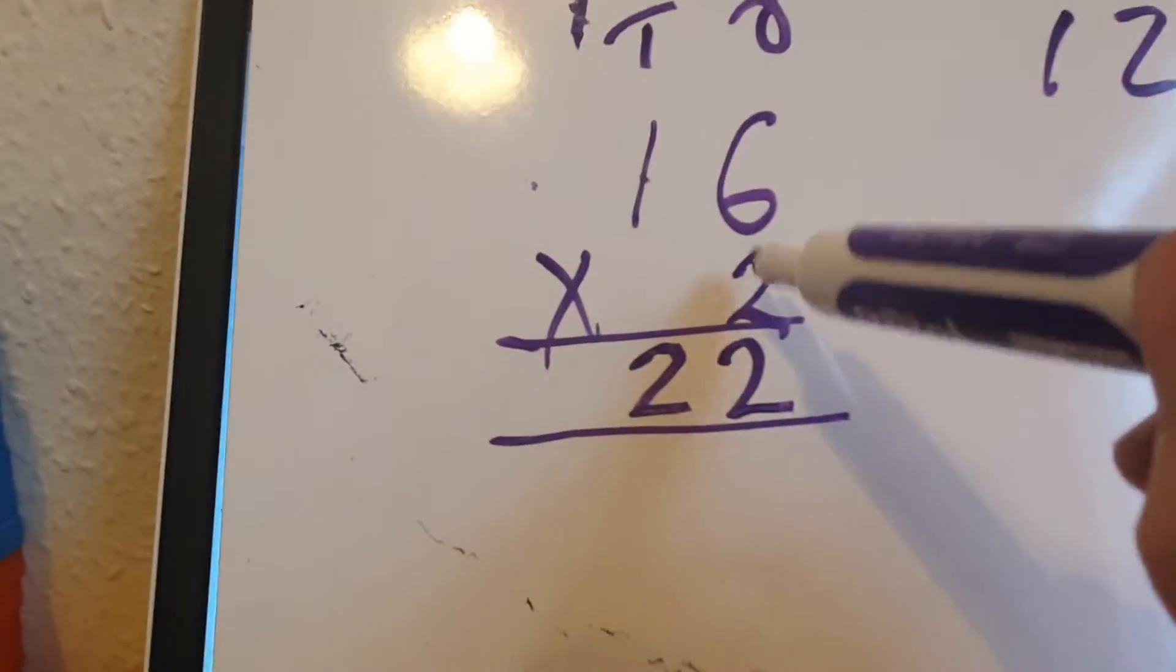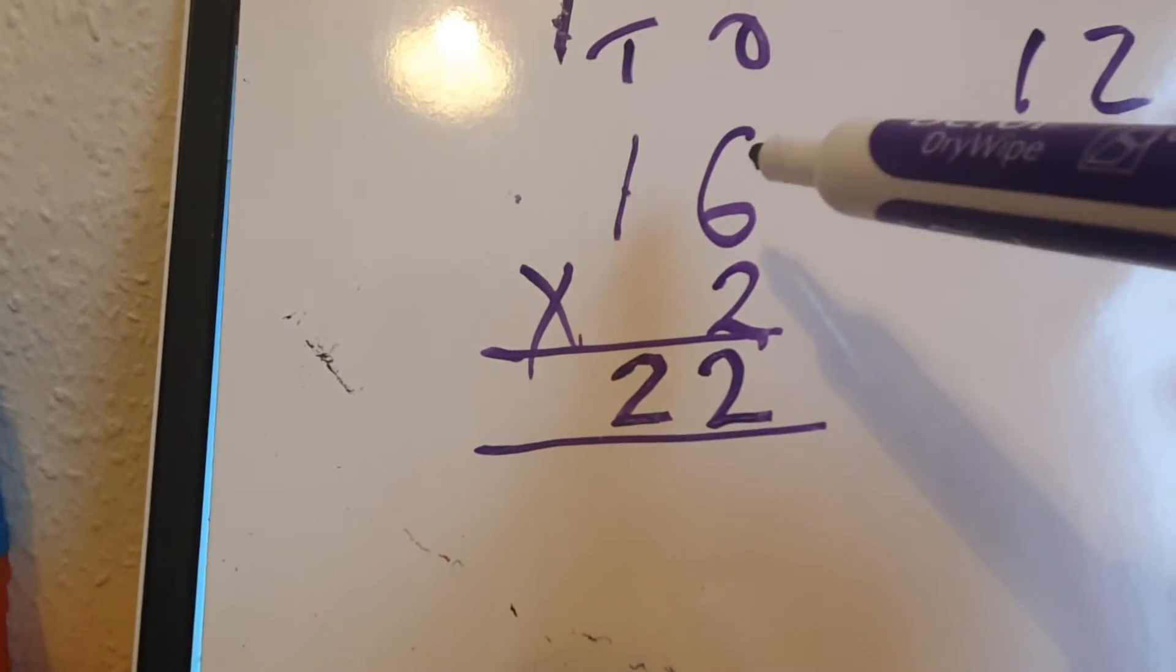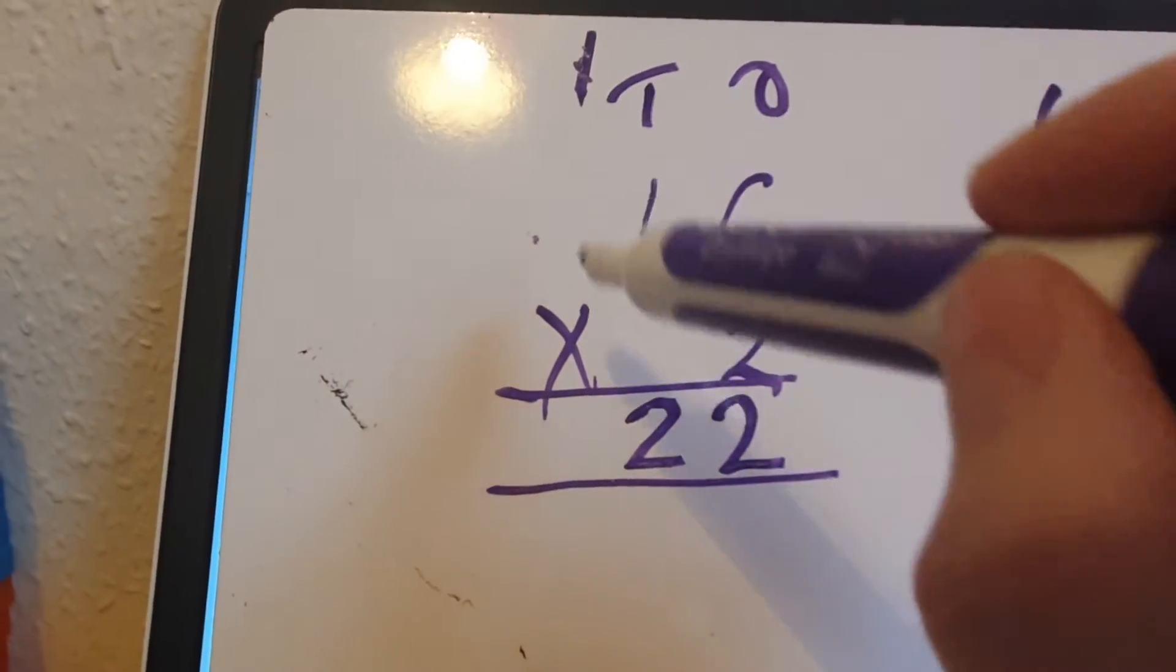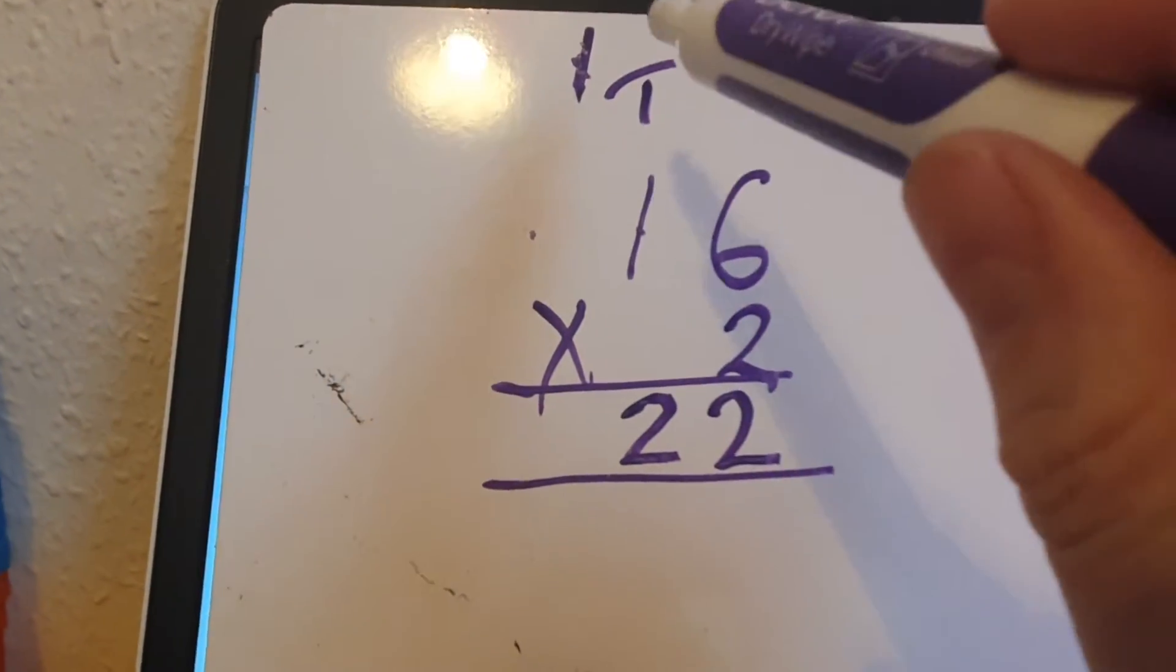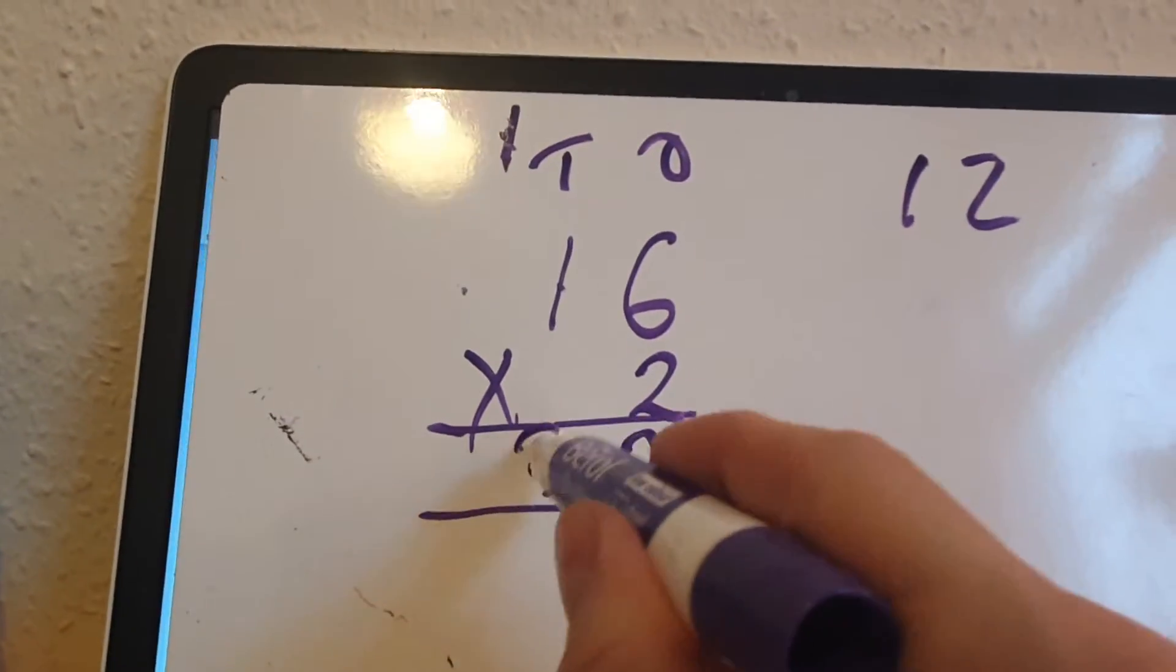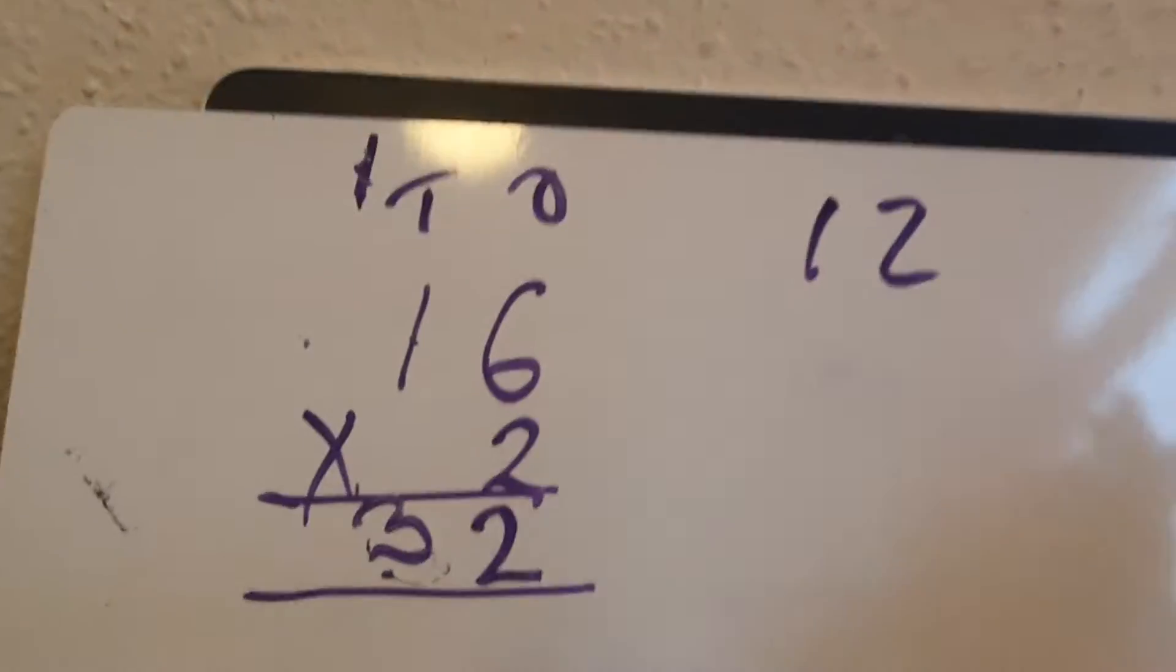But what I needed to do was this calculation. So 2 times 6 is 12, and then 2 times 1 ten is 2. Add that 1 which is 3. Let's see if we can do another one using the column method.